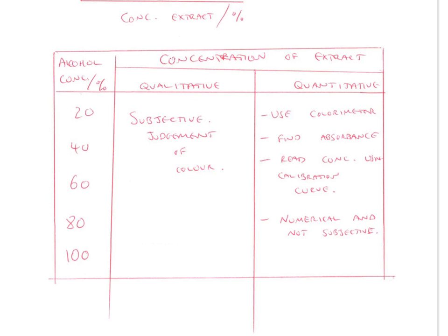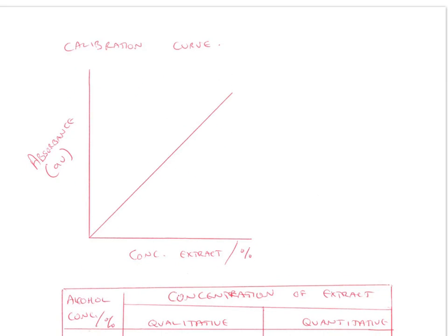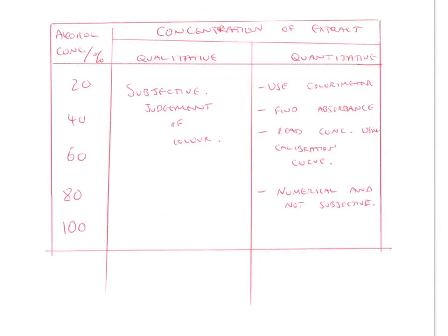Then what you can do is a quantitative reading, which is much better — it's a numerical value, it's not subjective. So in each of your values that you got for each alcohol concentration, you can use the colorimeter to find the absorbance, then read off the calibration curve above. So if you got a certain alcohol concentration and got a value of 0.5, you'd read off the absorbance of 0.5, read across, read down, and that is the concentration of beetroot extract that you had at that value. As you can see, that is completely numerical and not subjective.